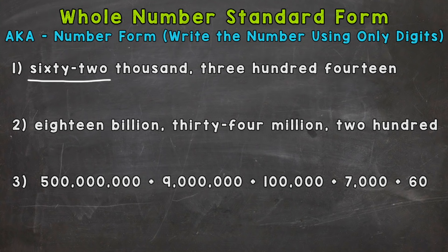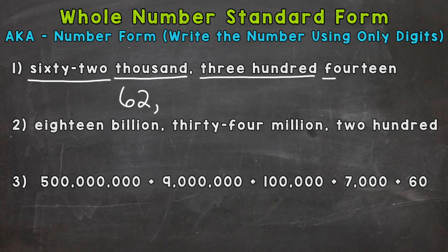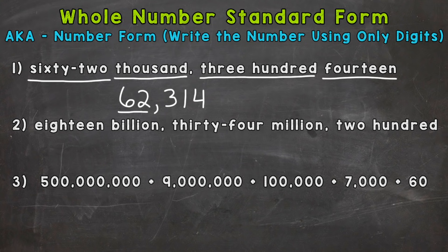We'll start with this 62. We know it's going to be in the thousands period, so that 62 has to have a value of 62,000. We know the ones period comes next, so let's see what we have to wrap this up — we have 314. We need a three in the hundreds place because we need a three with a value of 300. Then we have 14: one in the tens and four in the ones. My suggestion: always double check that your word form and standard form matches. So 62,314 — read it out loud and make sure it matches that word form. And in this case we properly went from word form to standard form.